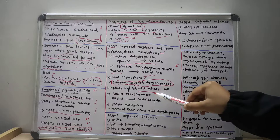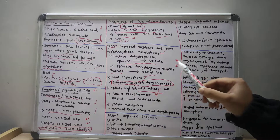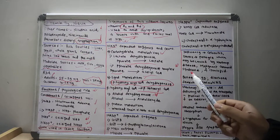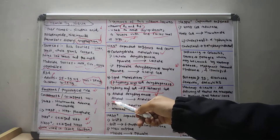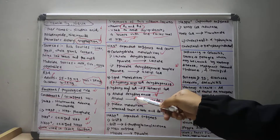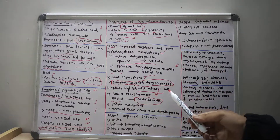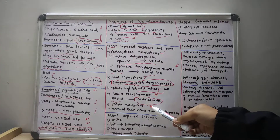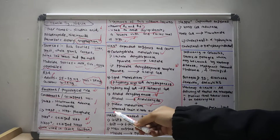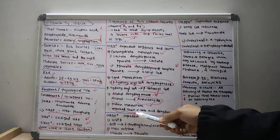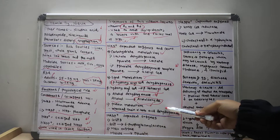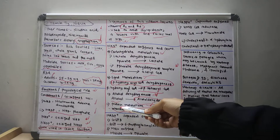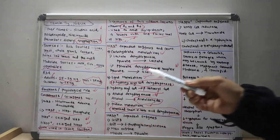Alcohol dehydrogenase also requires NAD plus to change alcohol into acetaldehyde. In protein metabolism, the branched-chain alpha-ketoacid dehydrogenase requires NAD plus.